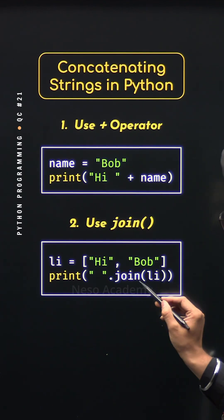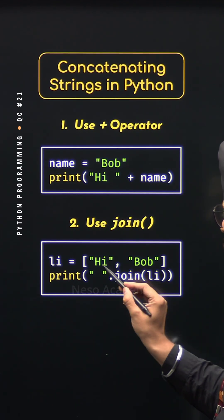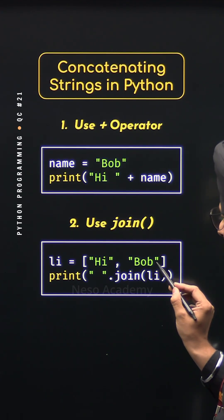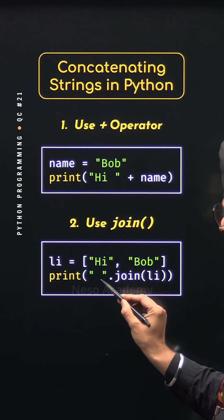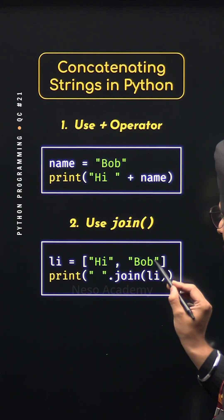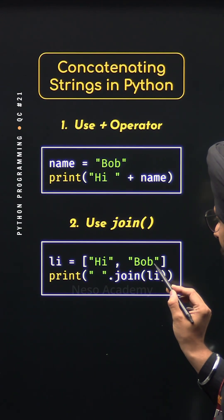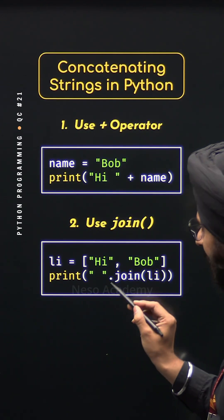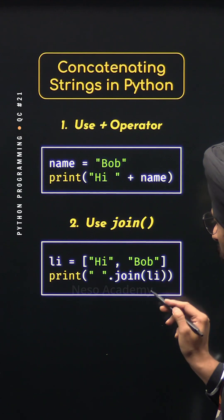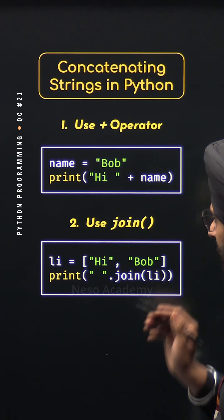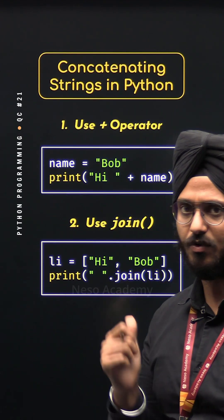This join method will concatenate these two strings and it will also place this separator between these two strings. So we will get 'hi', space, 'bob' as the result of this program.